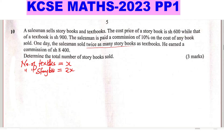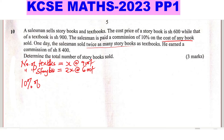The cost price of one storybook is 600 shillings, and for a textbook it is 900 shillings. The salesman is paid a commission of 10% on the cost of any book sold. So let's get the commission — this is how we get the commission: 10% of the cost of any book sold.